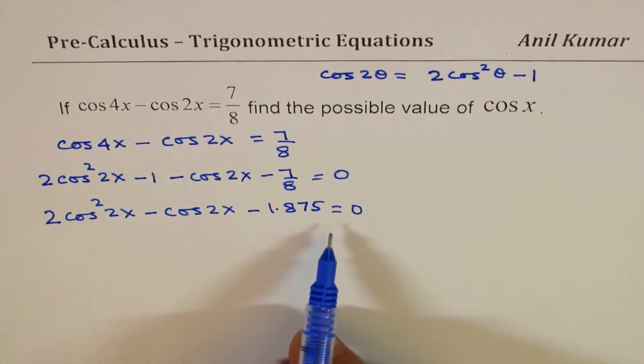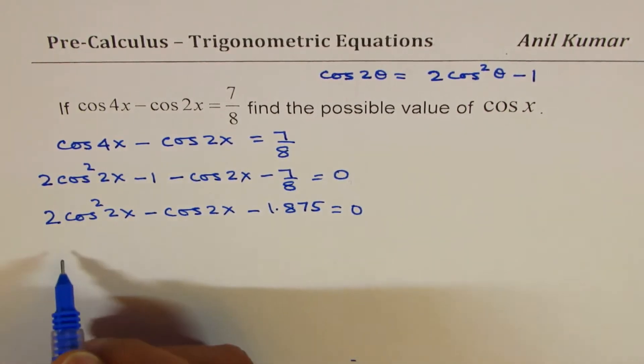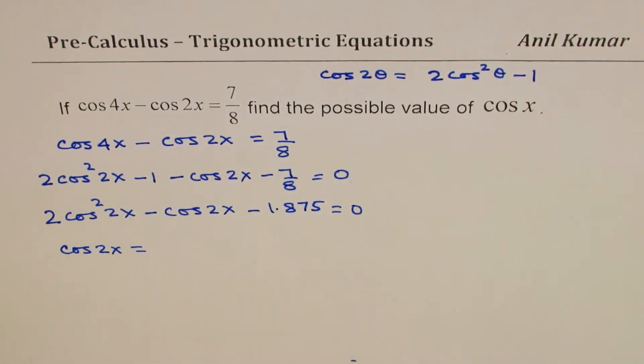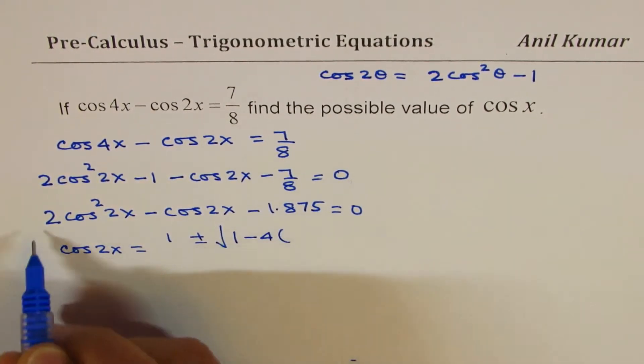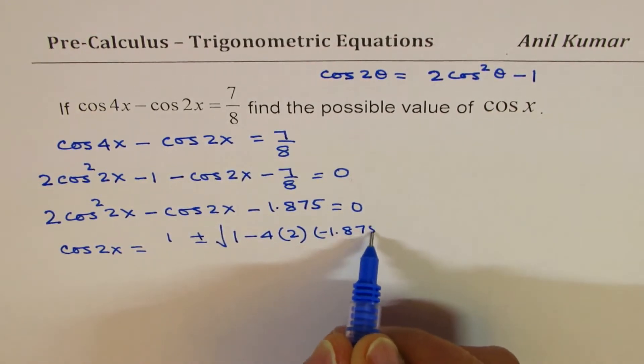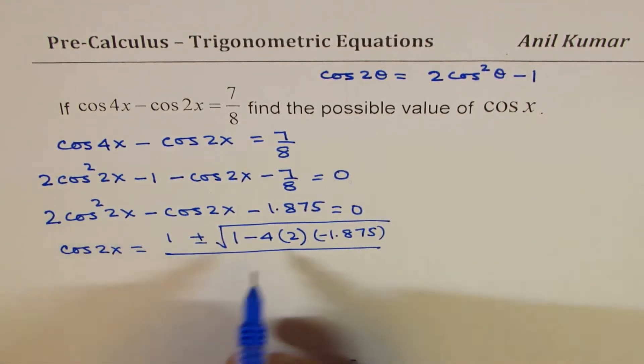This is a quadratic equation, so we can apply the quadratic formula to find what cos 2x is. Applying the quadratic formula, we get cos 2x equals minus b, which is 1, plus minus square root of b², which is 1², minus 4 times a, which is 2, times c, which is minus 1.875, divided by twice a, that means 4.